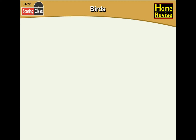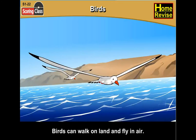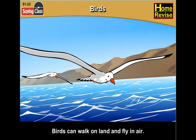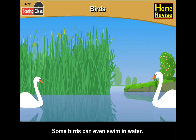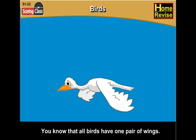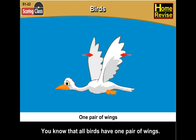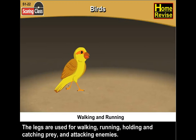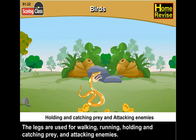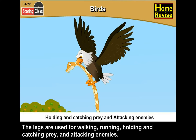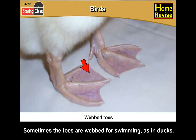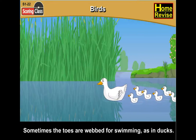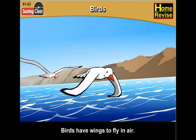Birds can walk on land and fly in air. Some birds can even swim in water. All birds have one pair of wings — these are the modified fore limbs. The legs are used for walking and running, holding and catching prey, and attacking enemies. Sometimes the toes are webbed for swimming, as in ducks. Birds have wings to fly in air.